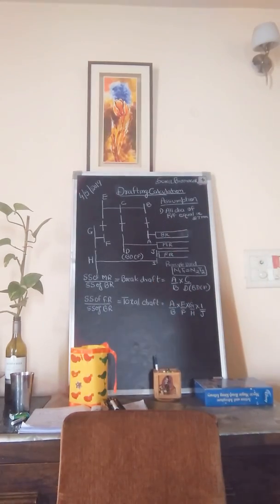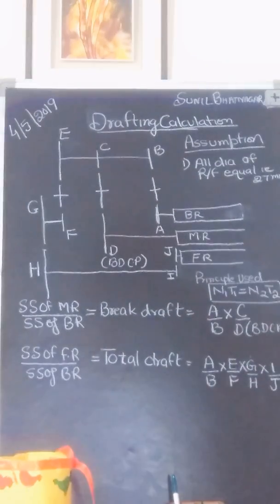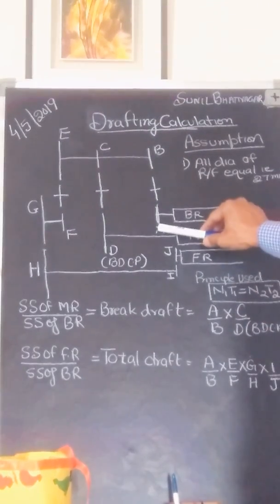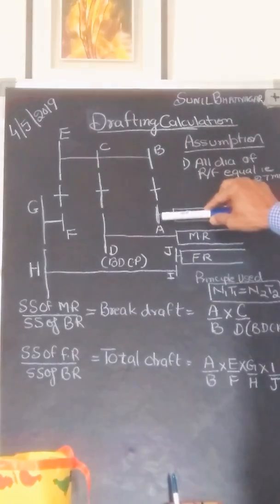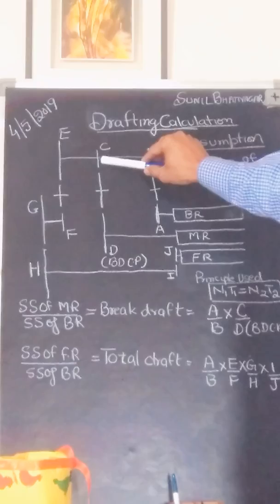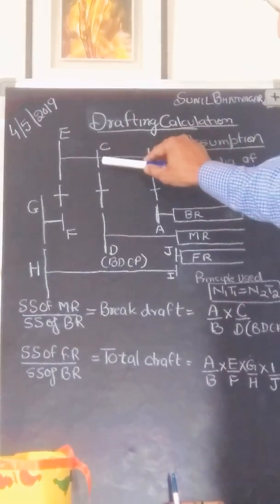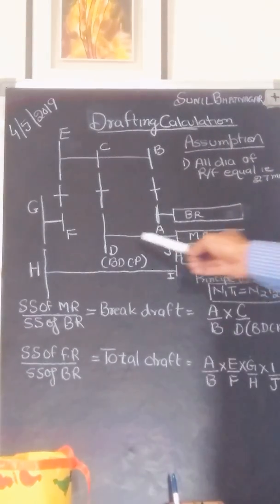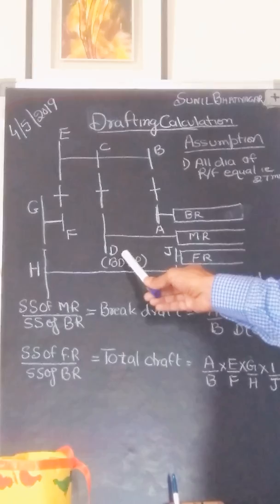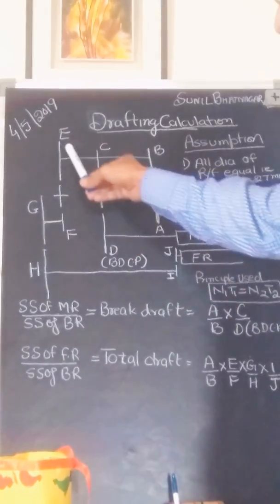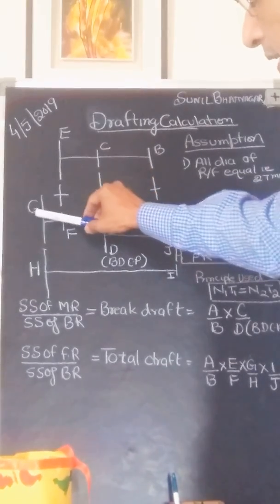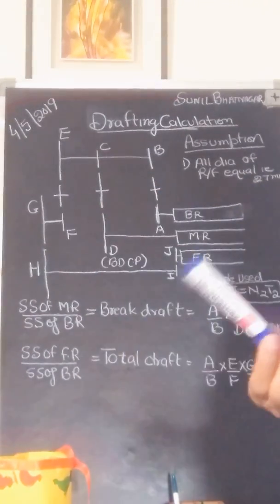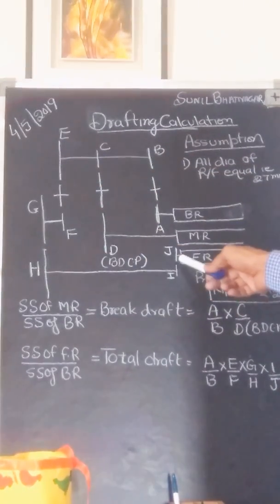The break draft is the surface speed of the middle roller divided by the surface speed of the back roller. Now please see the drafting arrangement. The back roller has gear A on the shaft; A drives B. From B, on the same shaft, C and E are there. From C, motion is given to D, which is called the BGCP — break draft change pinion. If we change this wheel, then the break draft can be changed. From E, motion is given to F with the help of carrier wheels, then G and H combination — these are the drafting wheels — with this combination you can change the total draft.